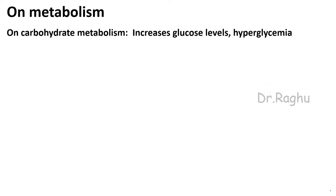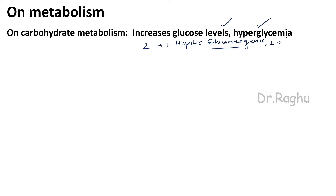Whenever cortisol levels increase, it increases glucose levels resulting in hyperglycemia. This occurs by two important mechanisms: first, cortisol stimulates hepatic gluconeogenesis — the production of glucose from non-glucose compounds; and second, cortisol inhibits glucose utilization by the cells. Whenever cortisol levels in the body increase, it can mimic diabetes, and that condition is called adrenal diabetes.